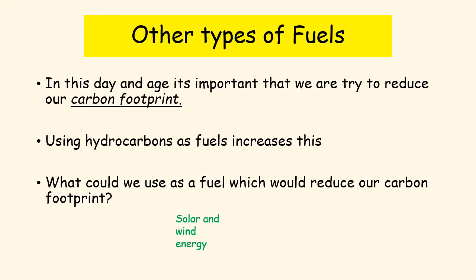Also hydroelectric energy — that is energy produced from flowing water, such as a river turning a water wheel, a dam on a river where we use the flow of water to produce electricity, or even using the tides. Solar, wind, and hydroelectric energy are all ways to reduce our carbon footprint, and the word we use to describe those is renewable energy.